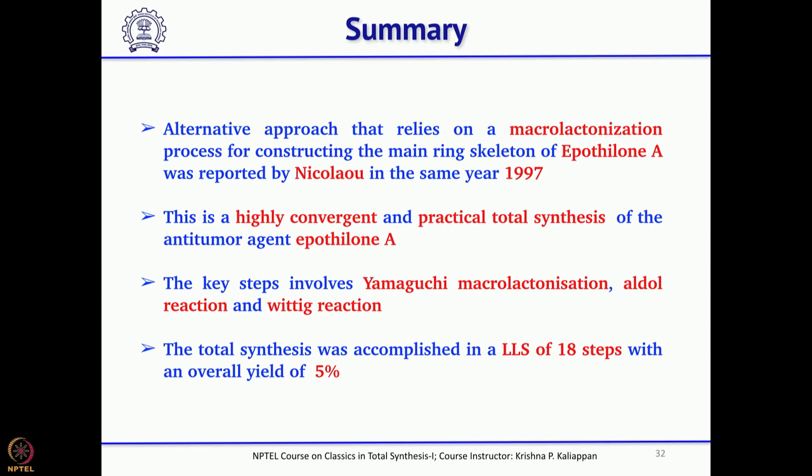Though the yield is slightly lower than the first synthesis — which had an overall yield of about 7% — this is a completely new approach to making Epothilone A. I will stop here and continue the discussion on total synthesis of Epothilone A by two more groups: one by Danheiser and the second by Samuel Danishefsky.